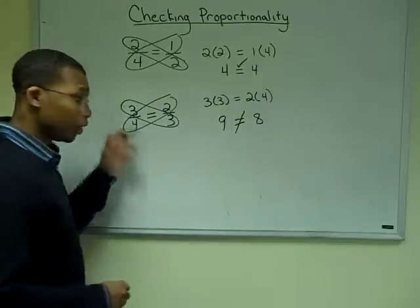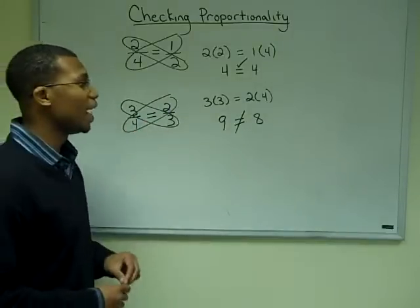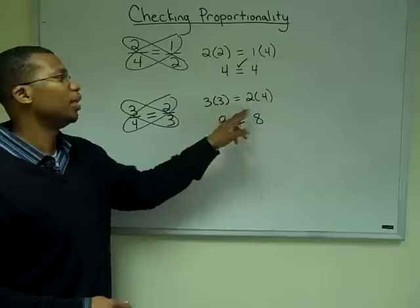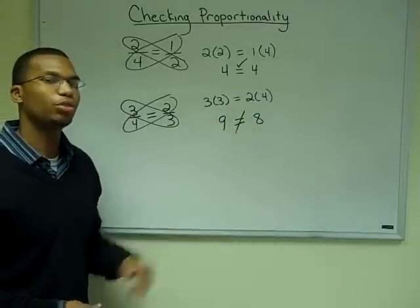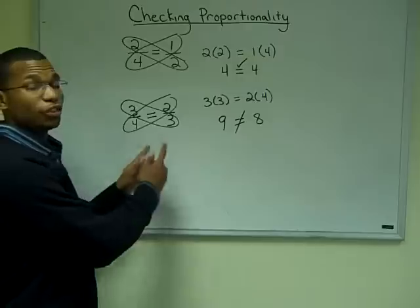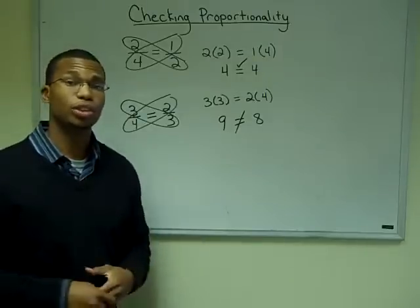Now let's look at three-fourths and two-thirds. If we multiply our diagonals, we get that three times three and two times four are not equal to each other. Therefore, these two fractions are not equal to each other.